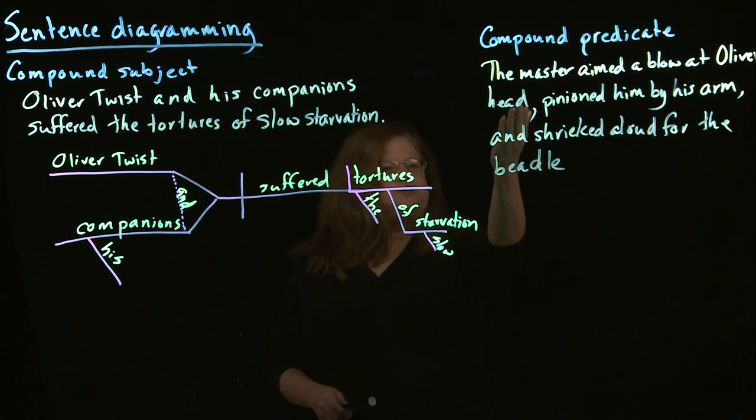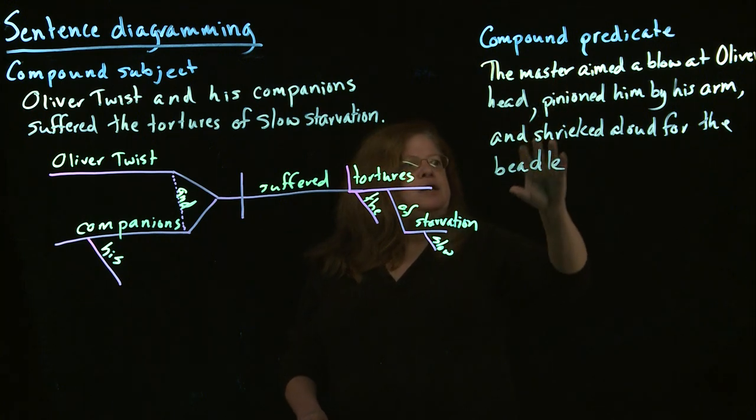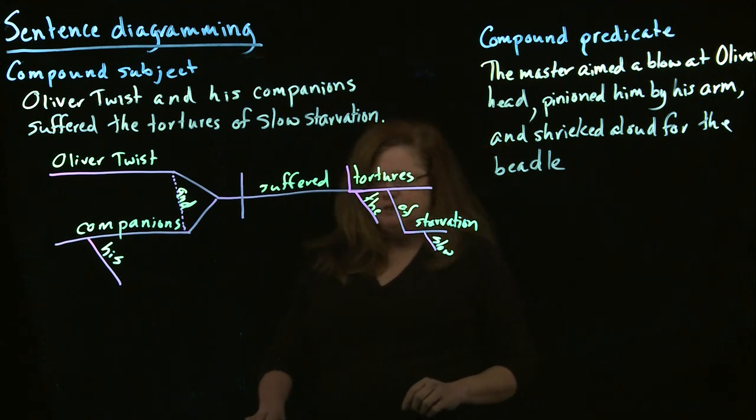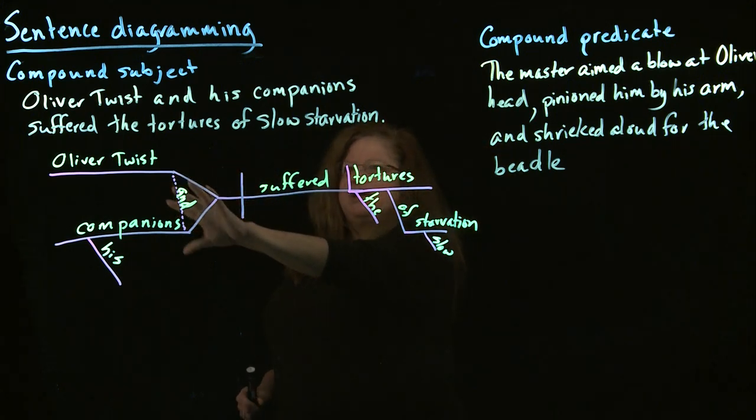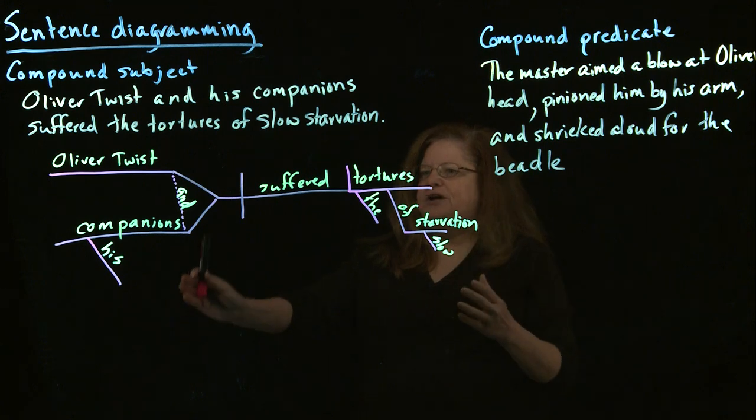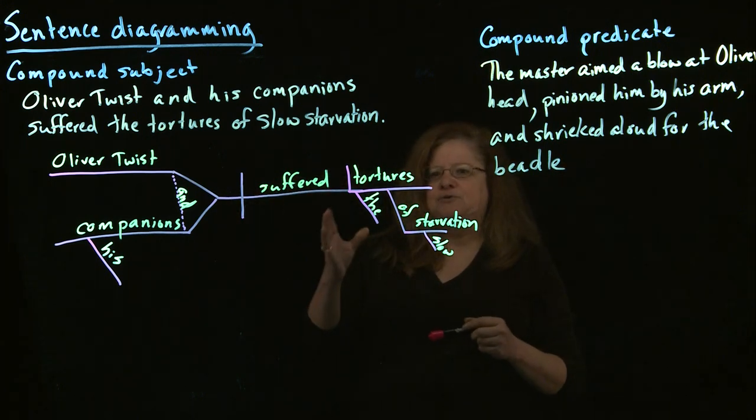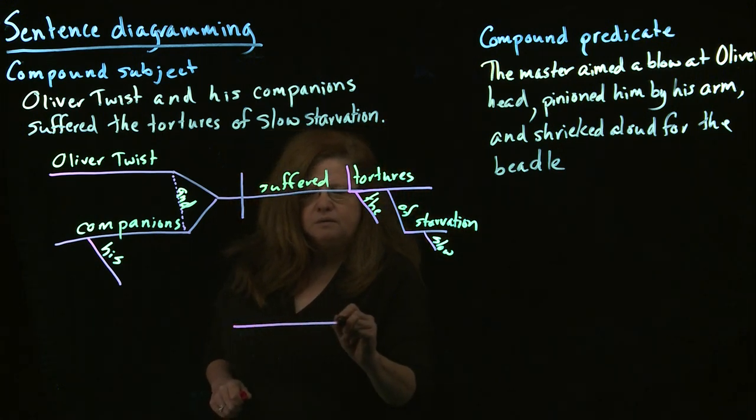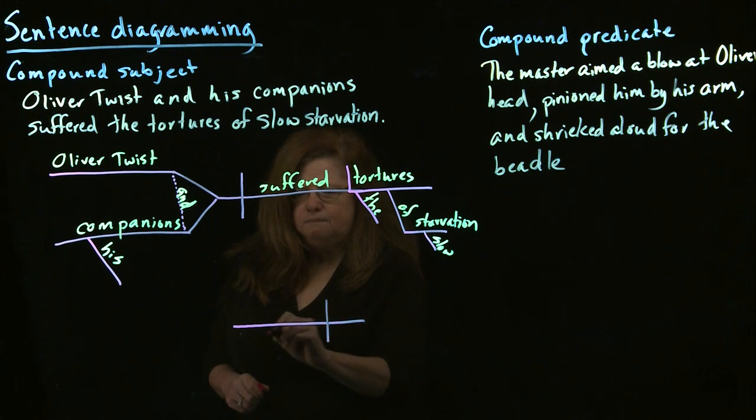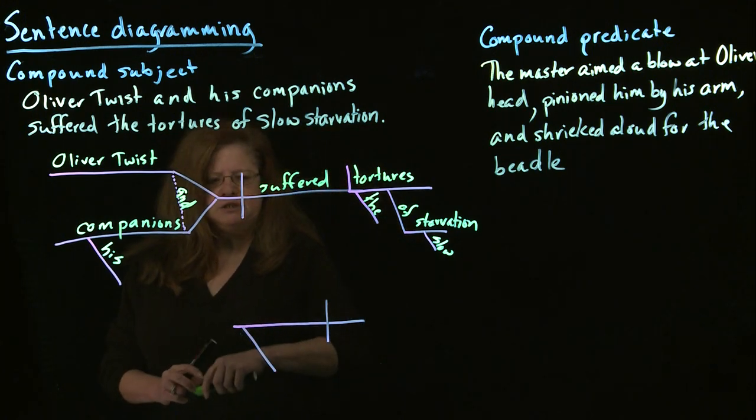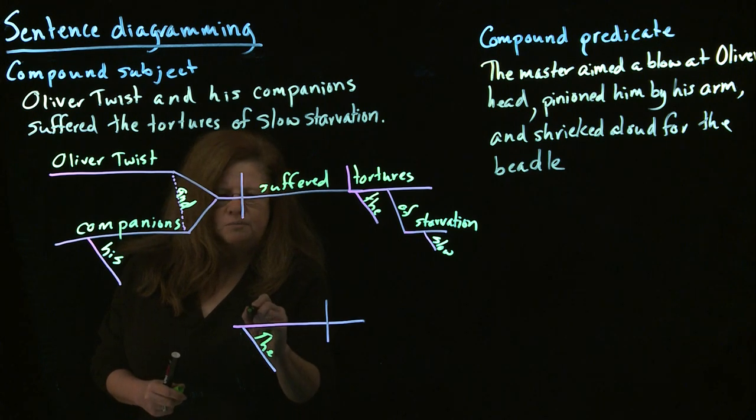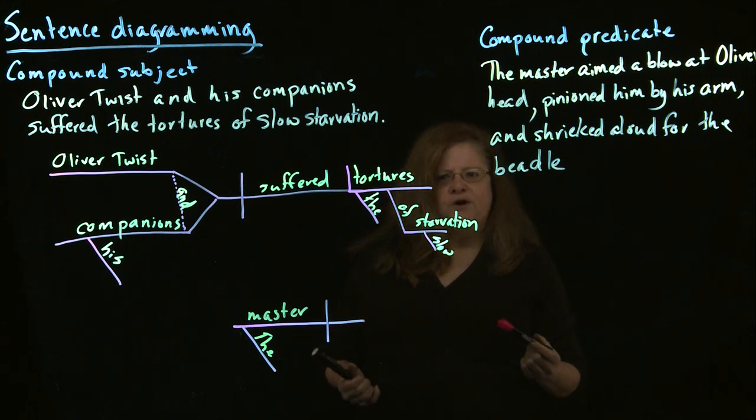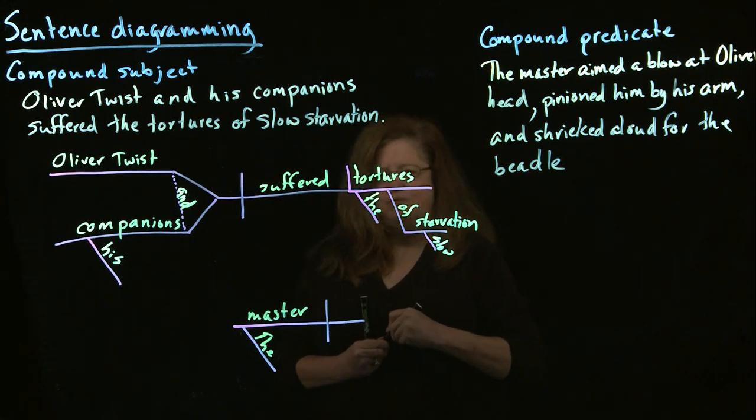So what we have in this particular sentence, we only have one subject, the master. But then we have him doing multiple things. So we've got multiple predicates in this one. And so just like when you had your subjects branching out to separate lines, you're going to, in this sentence, have your predicates branching out into a separate line. So we'll start with our subject, the master. And at this point, we're going to branch out to show we have multiple predicates.